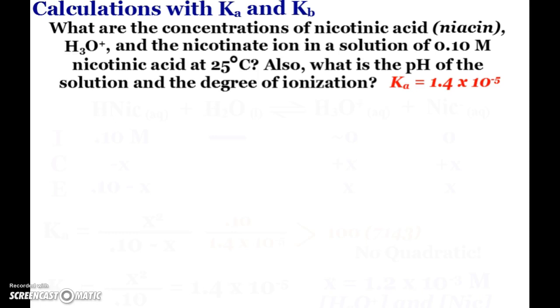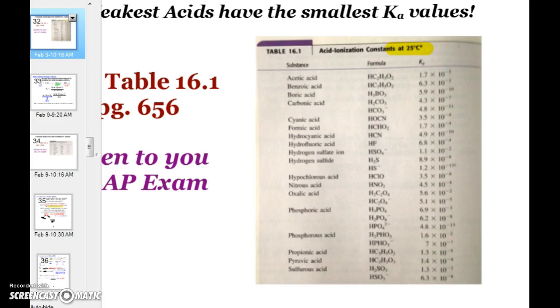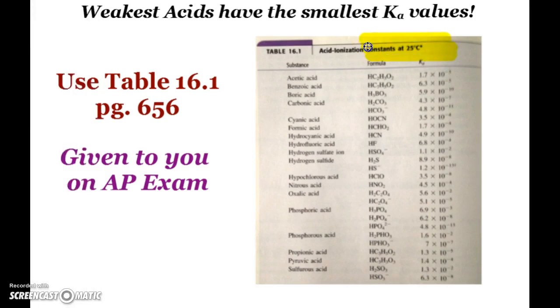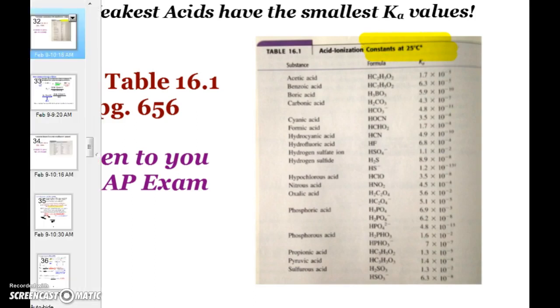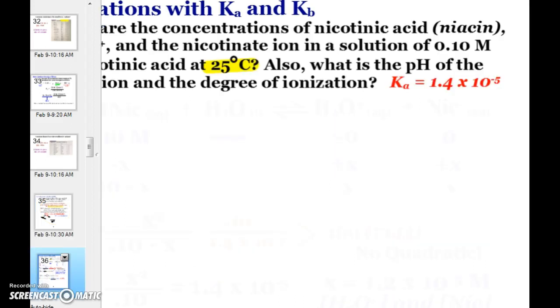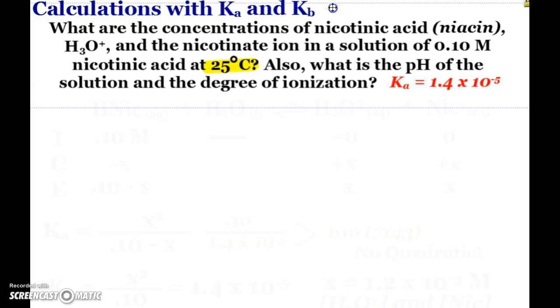Nicotinic acid, niacin. What are the concentrations of this acid, hydronium, and the nicotinate ion in a solution that is 0.1 molar nicotinic acid at, of course, our magical number of 25 degrees Celsius? Our K values are very temperature sensitive. So I also want to know the pH and the degree of ionization. Now, some of our weak acids and bases have some complex formulas, so we just usually abbreviate them. So like nicotinic acid, I will call H-nic. And the nicotinate ion, I would call nic minus.